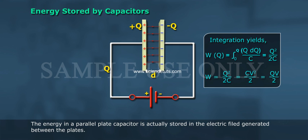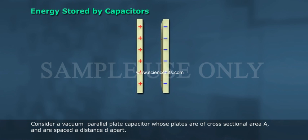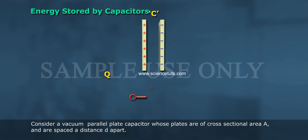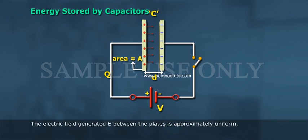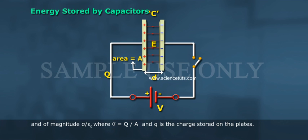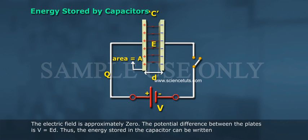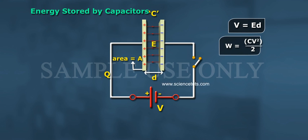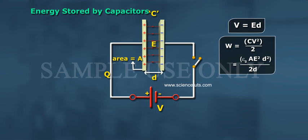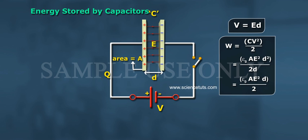The energy in a parallel plate capacitor is actually stored in the electric field generated between the plates. Consider plates of cross-sectional area A spaced a distance d apart. The electric field E between the plates is approximately uniform and of magnitude σ/ε₀, where σ = Q/A and Q is the charge stored on the plates. The potential difference between the plates is V = E·d. Thus the energy stored is W = CV²/2 = ε₀·A·E²·d² / 2d = ε₀·A·E²·d / 2.